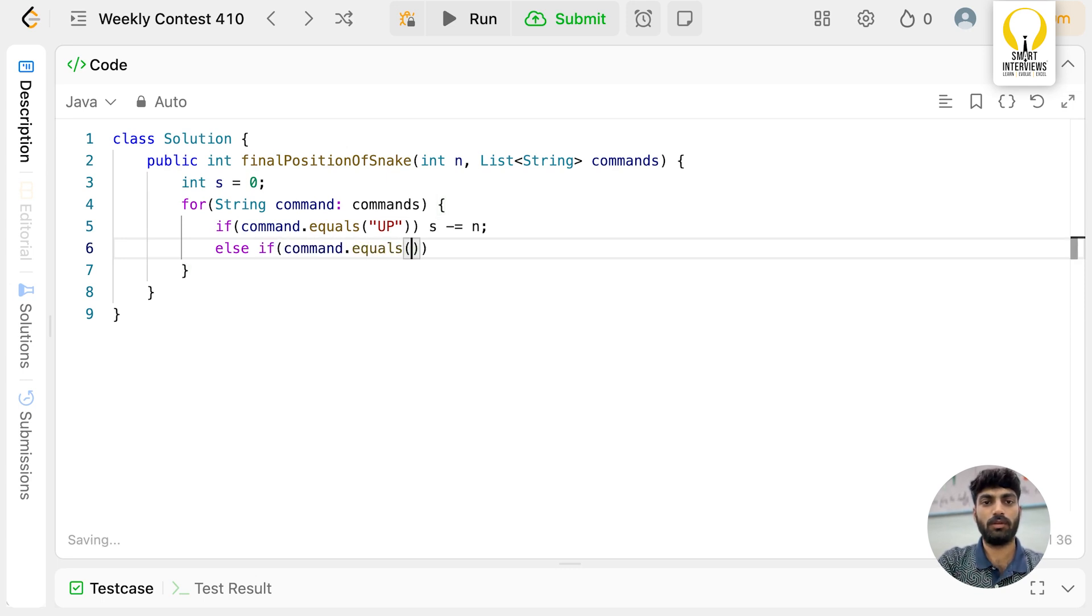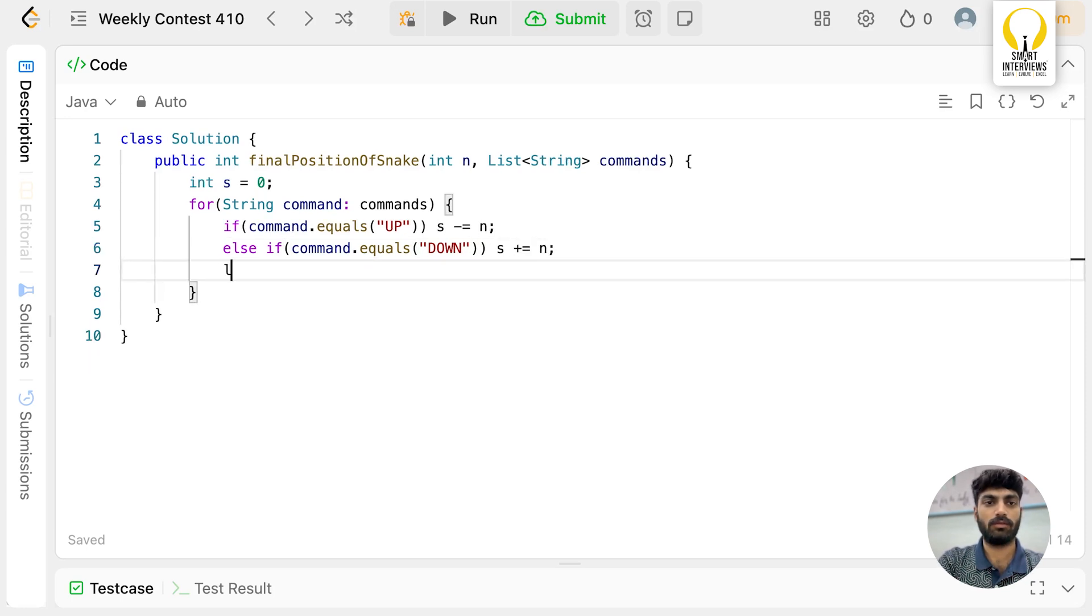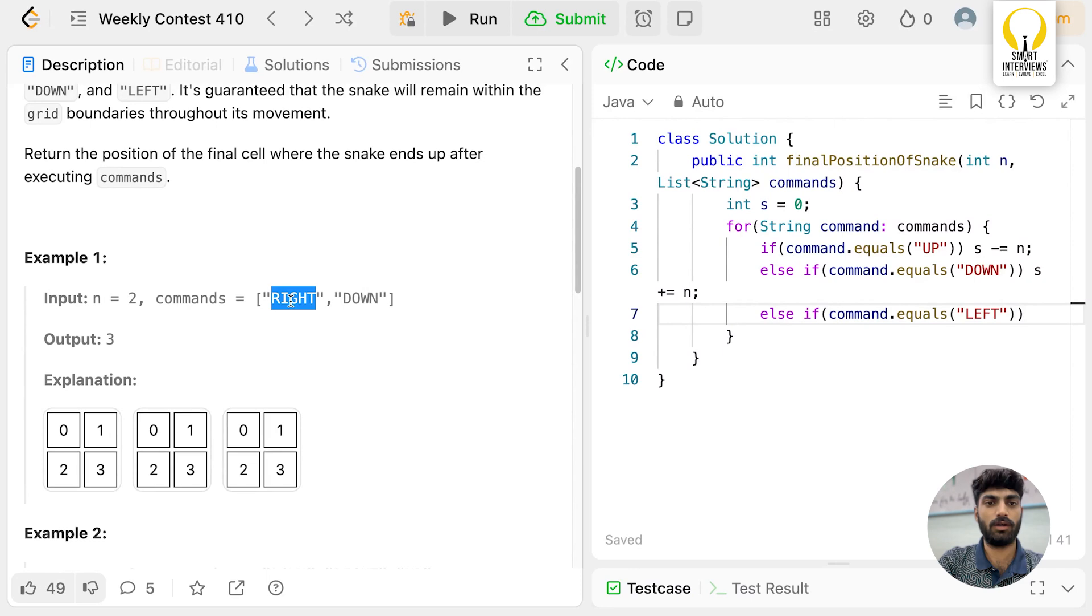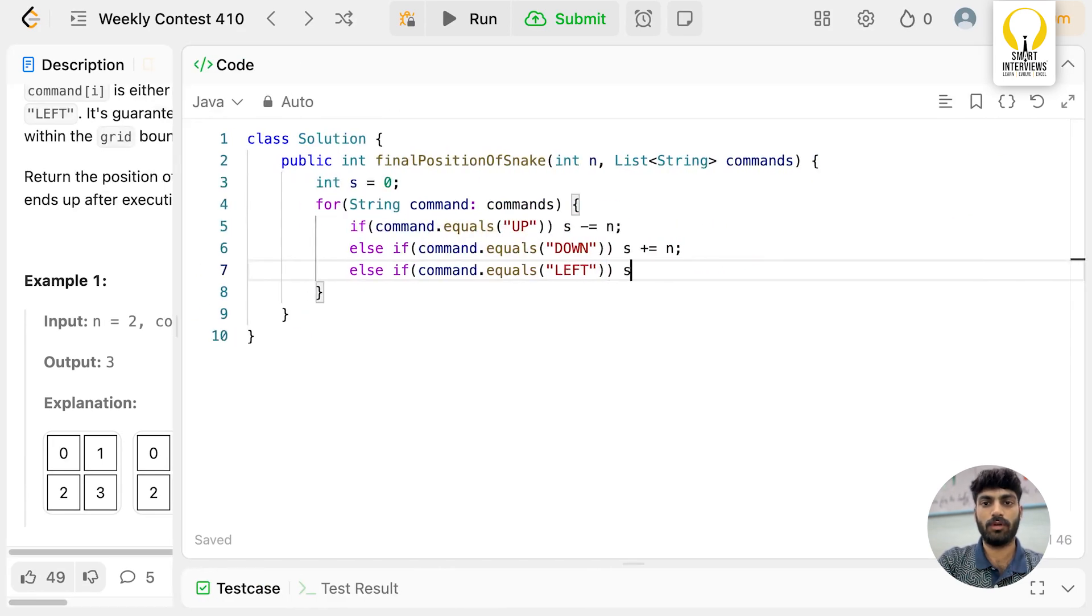If command.equals DOWN, simply add n. Else if command equals LEFT—these are caps, that's why the directions are in caps—subtract 1. Else, the only direction left is RIGHT, so we don't need to check it separately. Just add +1.